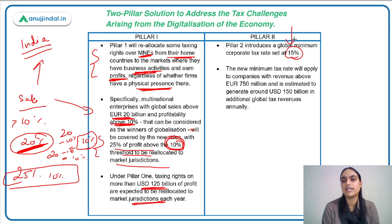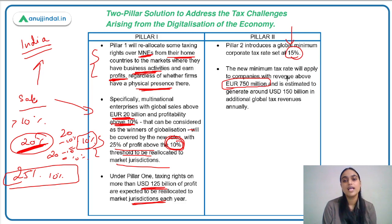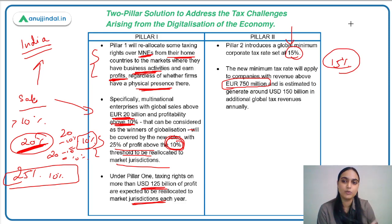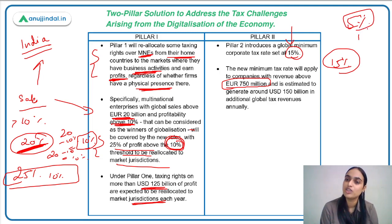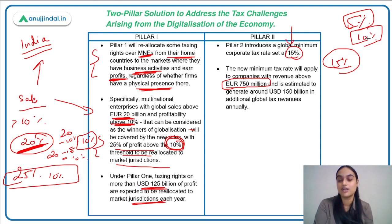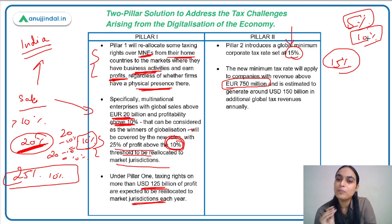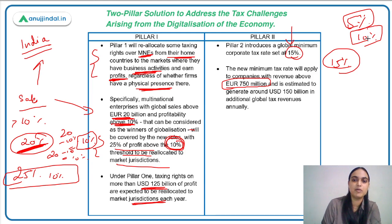The second pillar means that companies having revenue above 750 million euros must pay at least 15% tax. Suppose you are doing business through a country where you only pay 5% tax but you earn revenue of more than 750 million — the remaining 10% you will have to pay in your home nation. If you are operating in another country to save tax and your home country has accepted the global tax deal, you must pay the rest of the tax at home. You cannot avoid the 15% minimum tax.